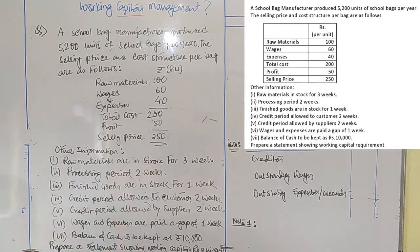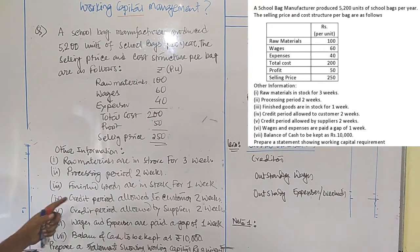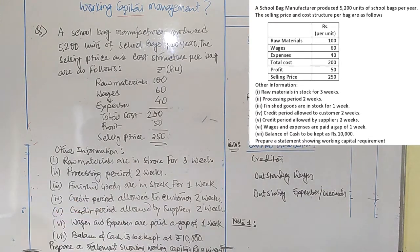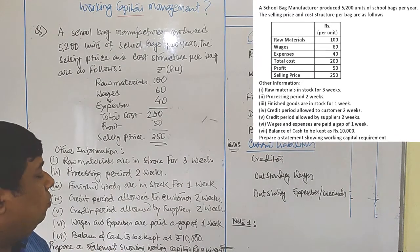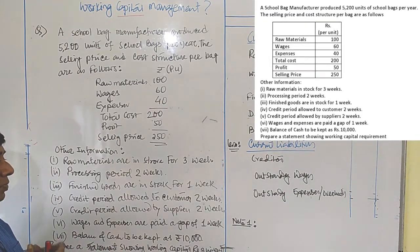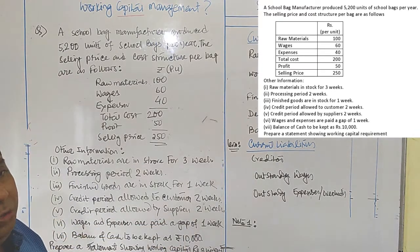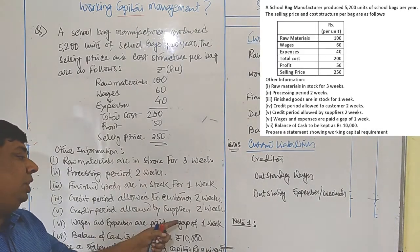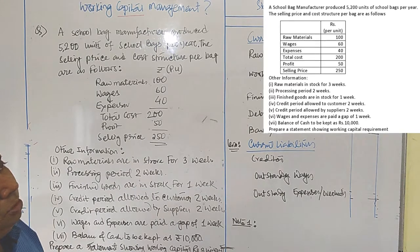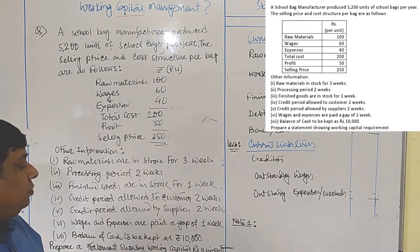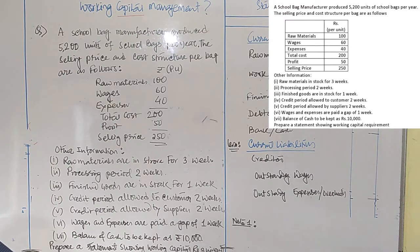A few other pieces of information are also available. Raw materials are on average in the store for three weeks, processing period is two weeks, finished goods are in stock for one week. Credit allowed to customers is two weeks, credit period allowed by suppliers is two weeks, and expenses are paid with a gap of one week. A balance of cash to be kept is 10,000, which must always be maintained for contingencies and to maintain immediate liquidity of the business.